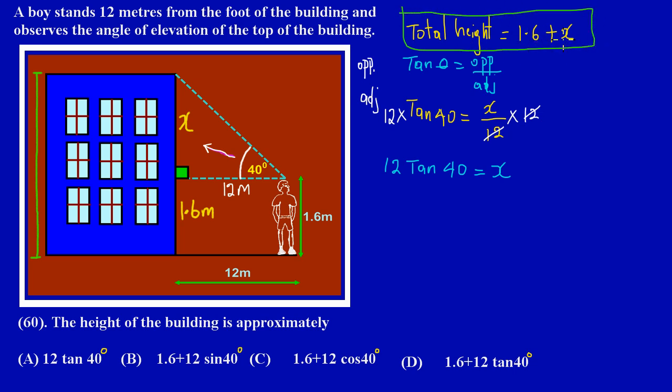We had here for the total height, my friends, 1.6 plus x. That would give us a total height. Now since we have an expression in x here, then now I can simply say my total height must be equal to 1.6, which we have already established...